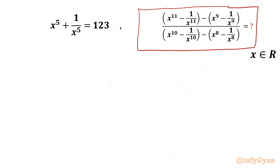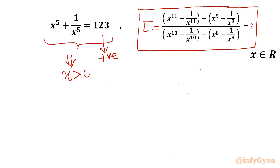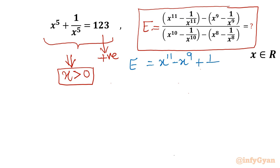Let us get started by considering the expression equal to E, beginning with the given equation. The right-hand side is positive, so x cannot be negative. We conclude that x must be greater than 0. Now I will write the expression E: the numerator is x¹¹ - x⁹, and then 1/x⁹ - 1/x¹¹.